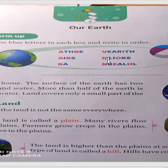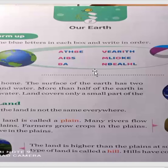Earth is like a bowl. Earth is our home. The surface of the earth has two parts: land and water. More than half of the earth is covered with water. Land covers only a small part of the earth.